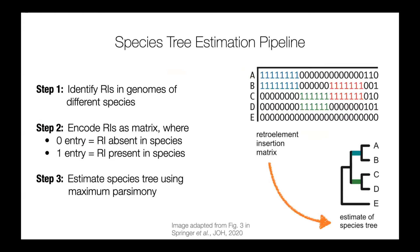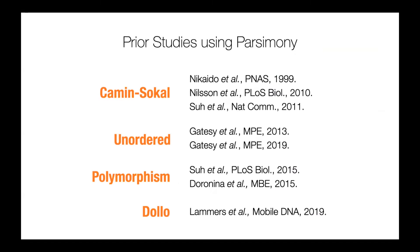Prior studies have used a pipeline where they identify insertions in the genomes of different species, encode them as a matrix where zero means the insertion is absent and one means it's present, and then estimate a species tree from this matrix — for example using maximum parsimony. Today we'll be zeroing in on that last step of species tree estimation. Some earlier studies used Camin-Sokal parsimony, but more recently several different variants of parsimony have been used.